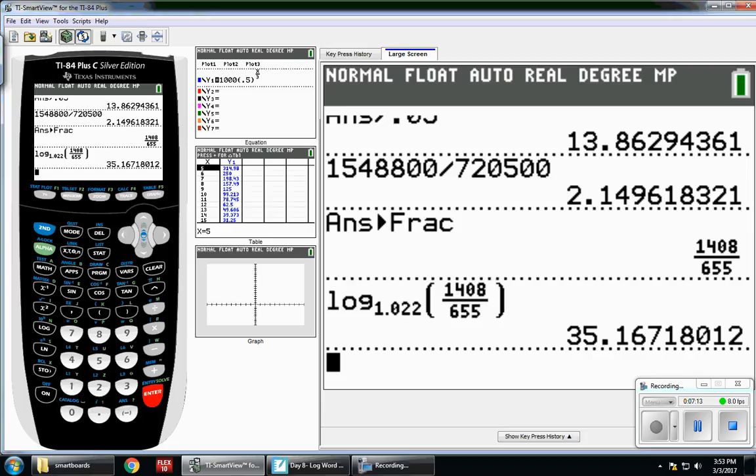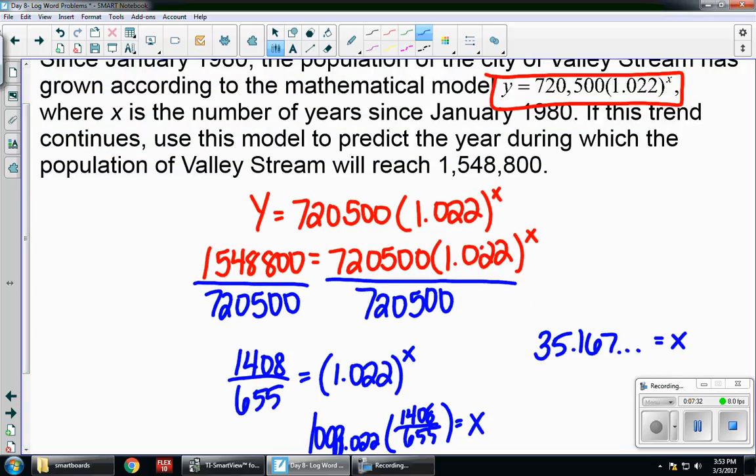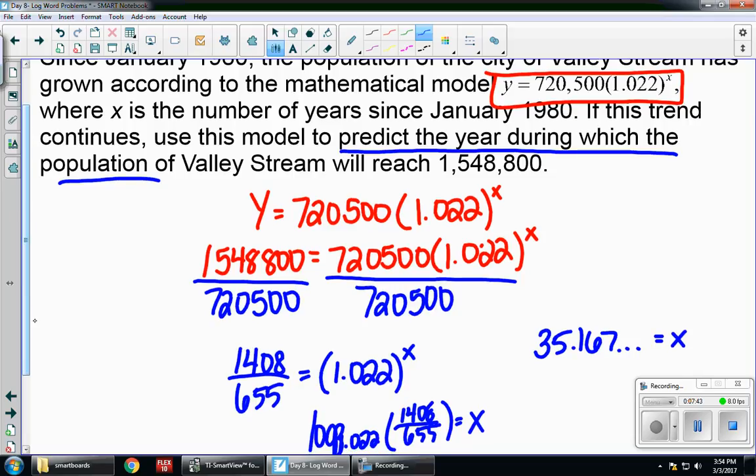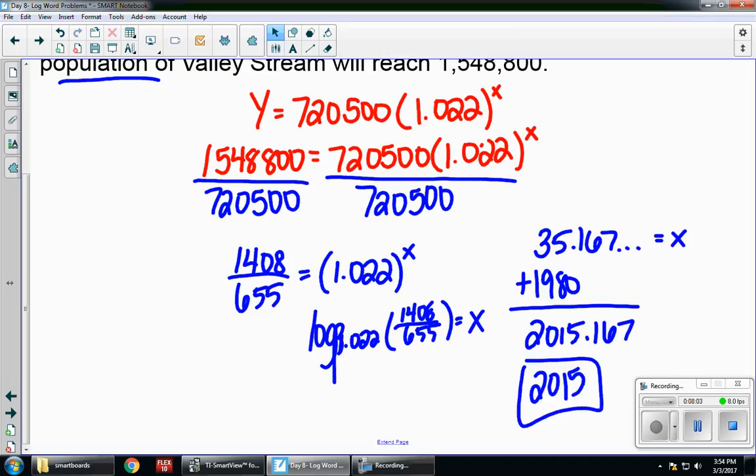So 35.167 is equal to x. Let's go back to the question. They asked to predict the year during which the population will reach that number. So they don't want to know how many years. They want to know in what year. So it's taking 35.167 years, but I'm starting at the year 1980. So that means that in the year 2015, this will occur. Be careful with the question. They don't want to know how many. They want to know during which particular year.